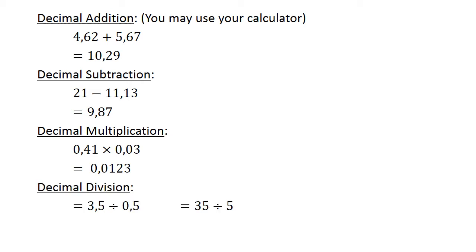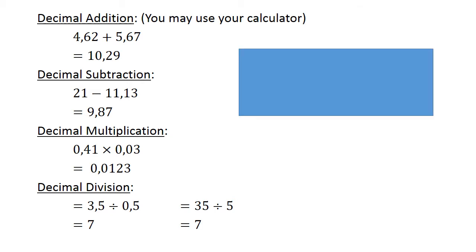Decimal division. 3.5 divided by 0.5. Again, multiply both with 10 to get whole numbers. And 35 divided by 5 equals 7.